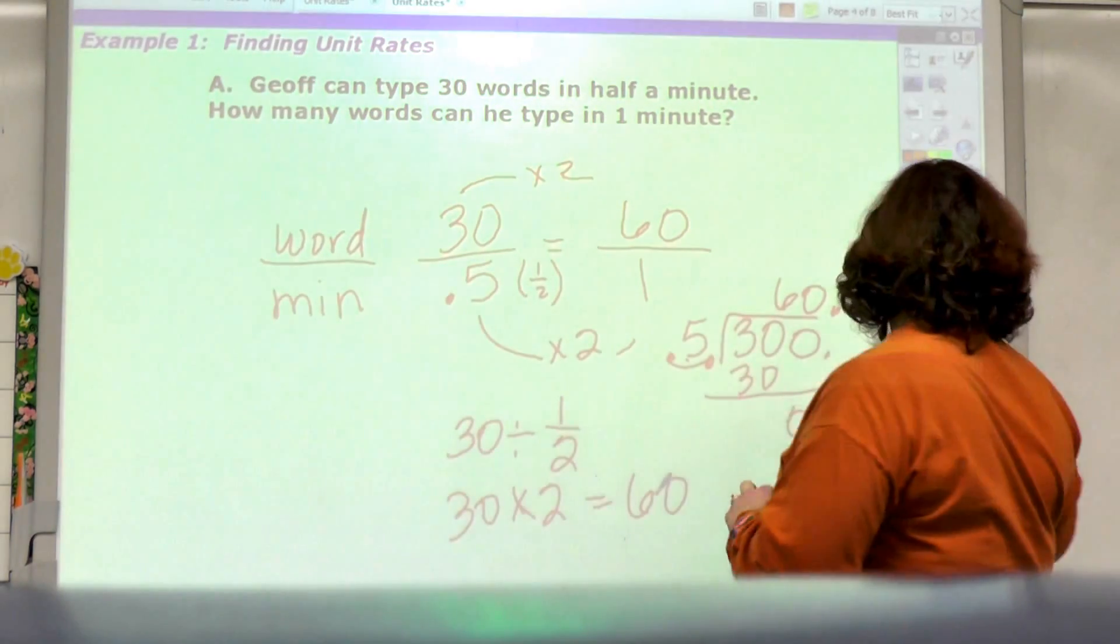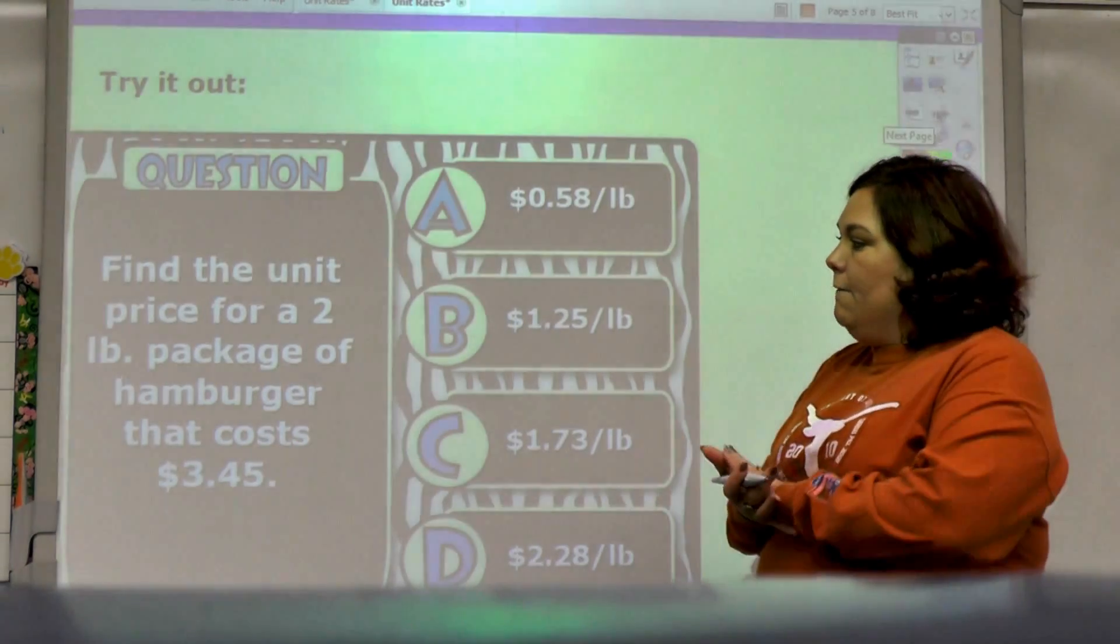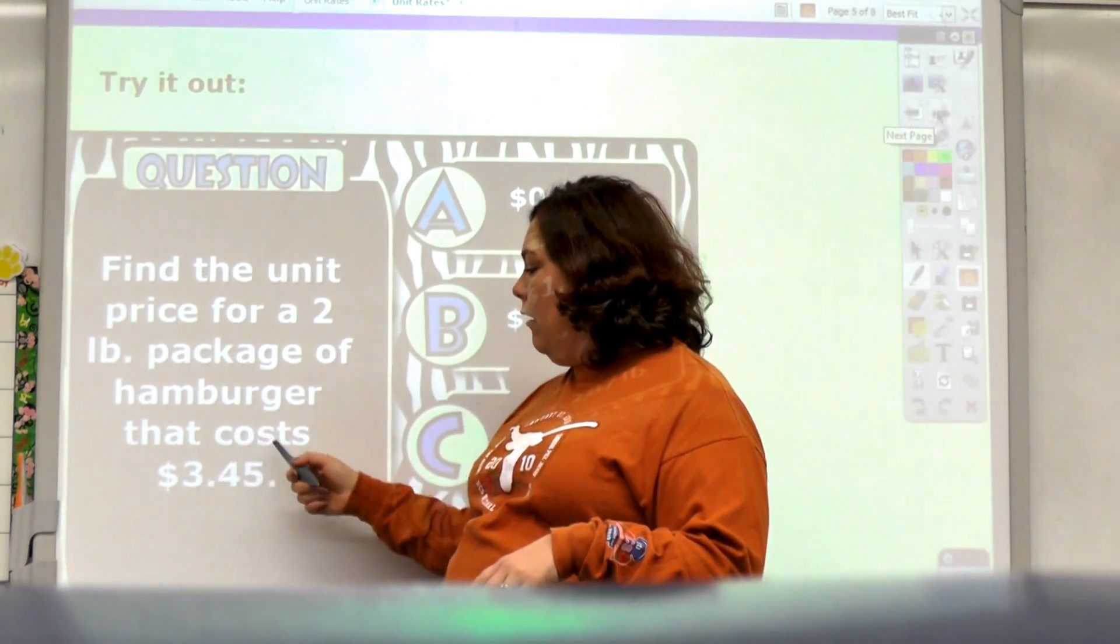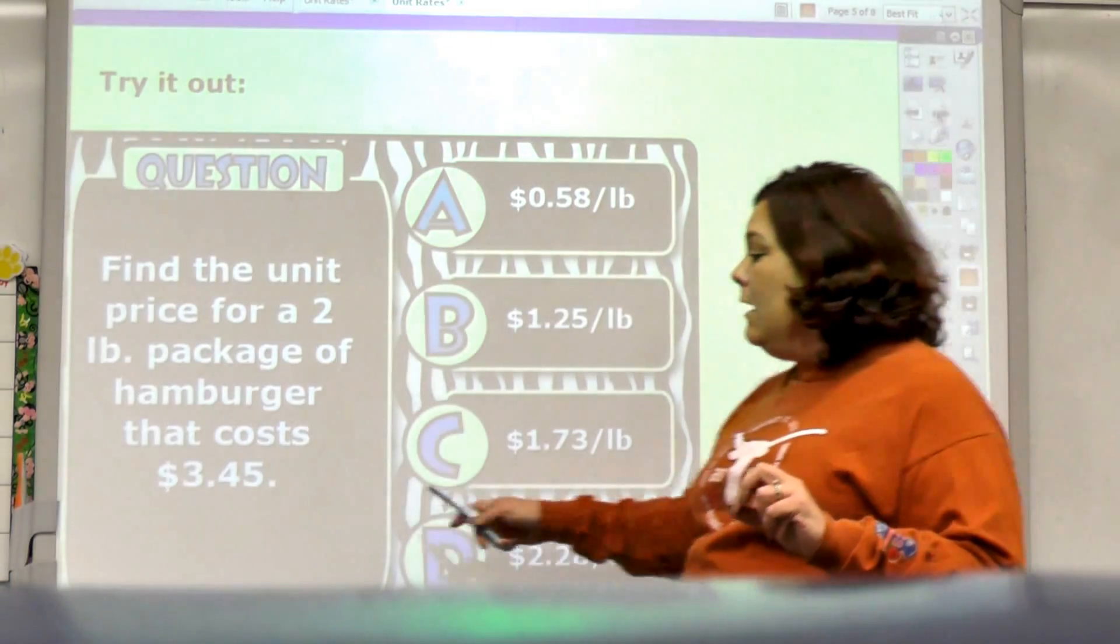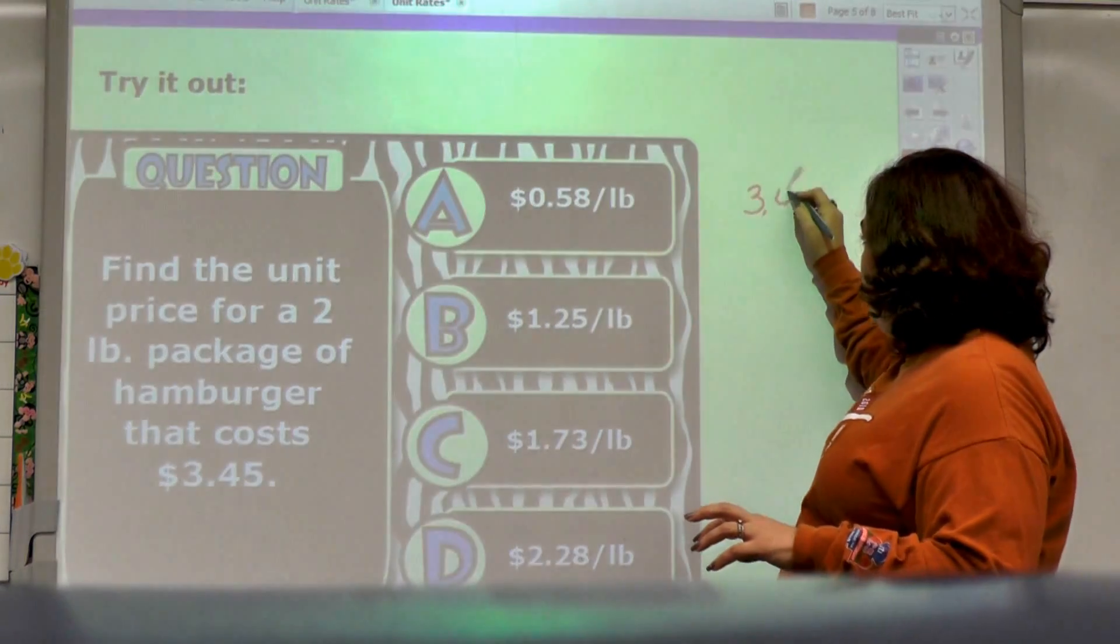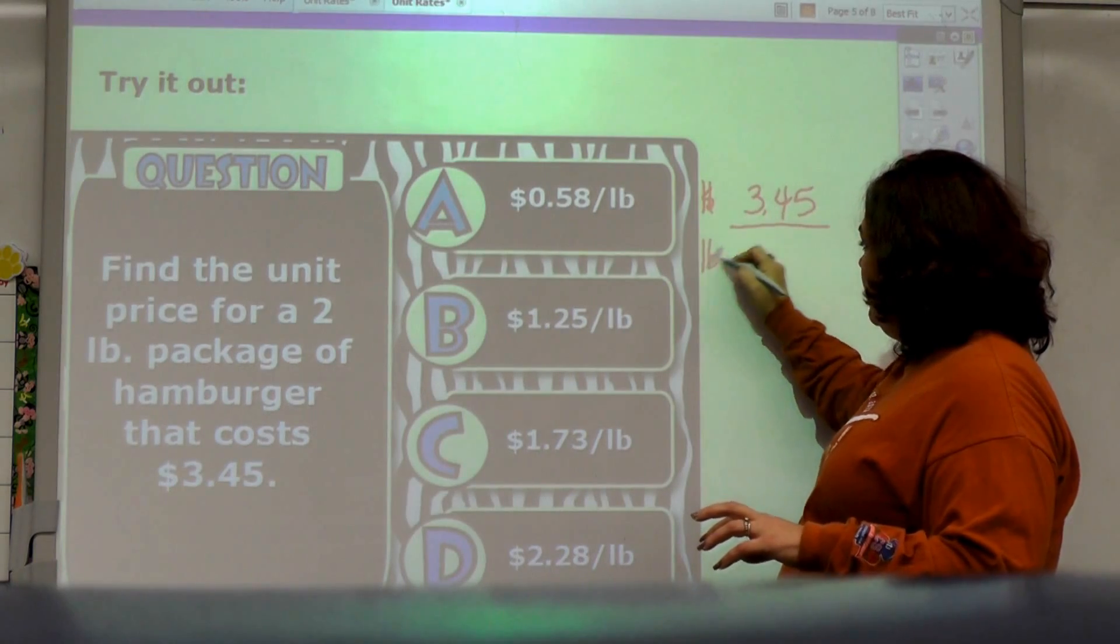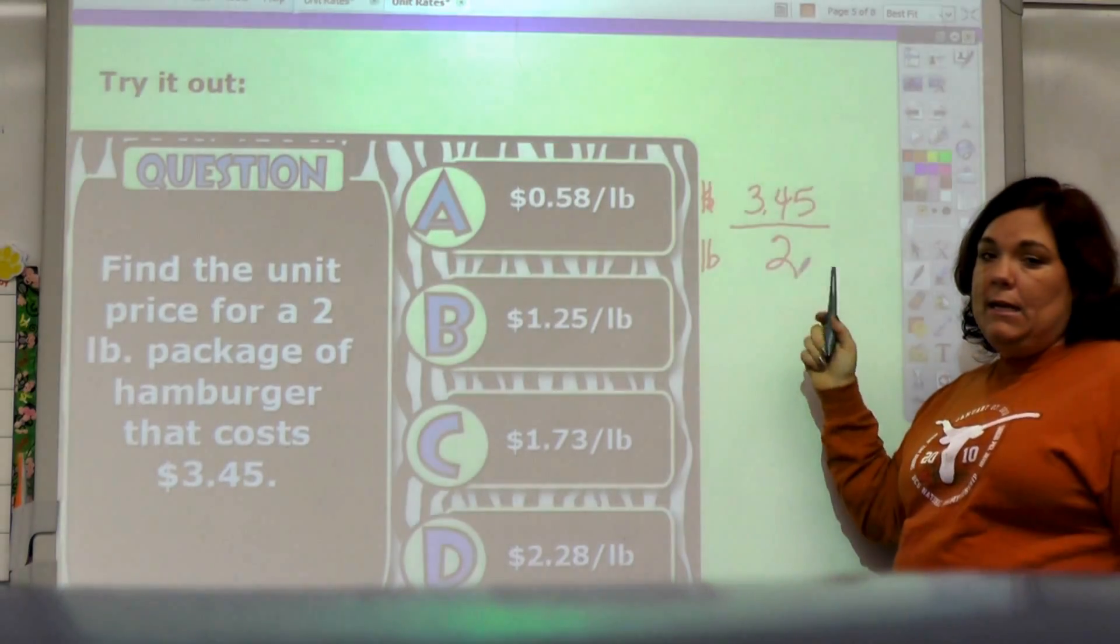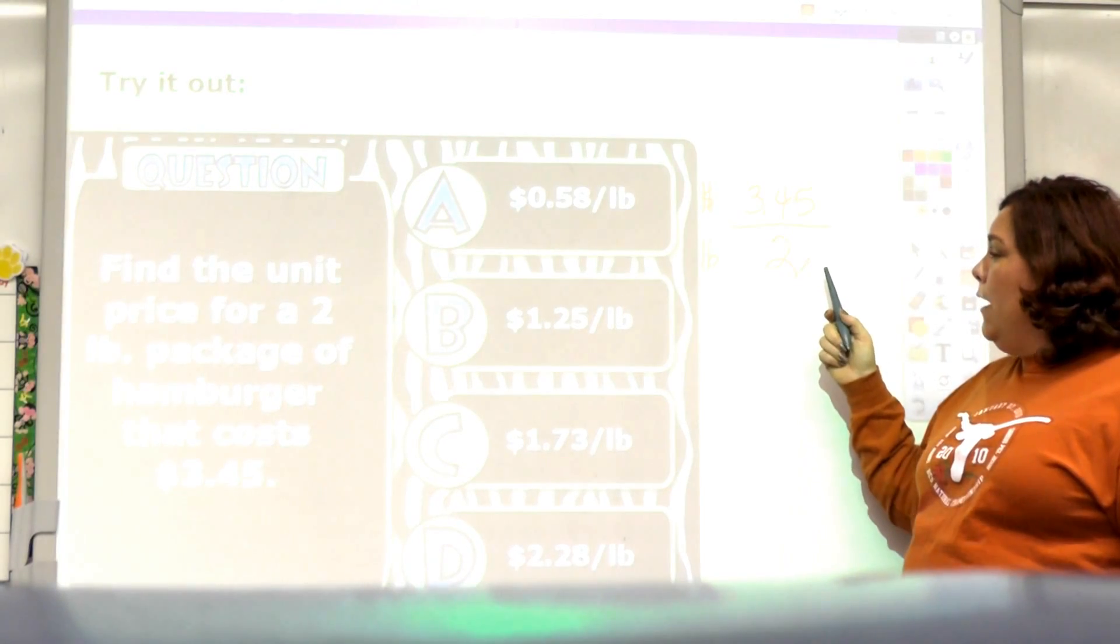Let's try it out. Find the unit price, the price per one for a two-pound package of hamburger that costs $3.45. I'm going to help you set it up and then let you do the math. The amount of cost needs to go at the top, 3.45, and that's for dollars and pounds, and that's for two pounds. I want to find out one pound, so I need the two on the bottom.